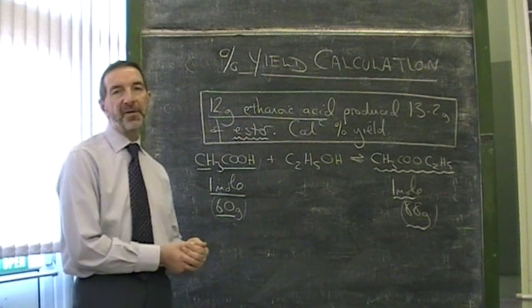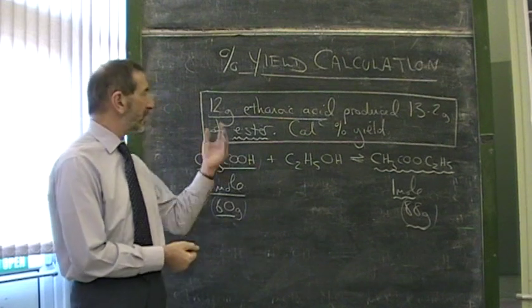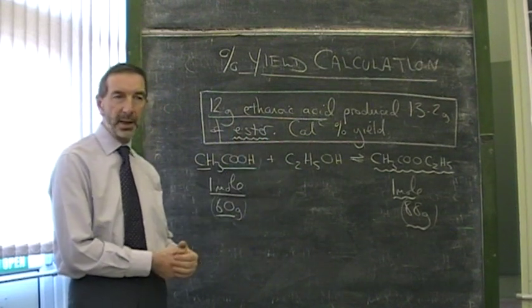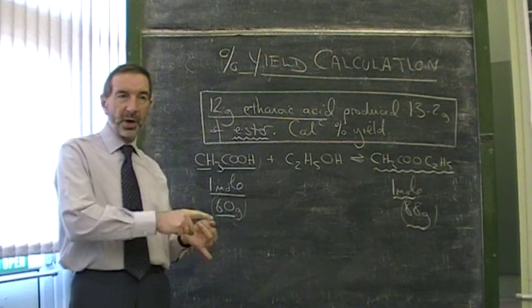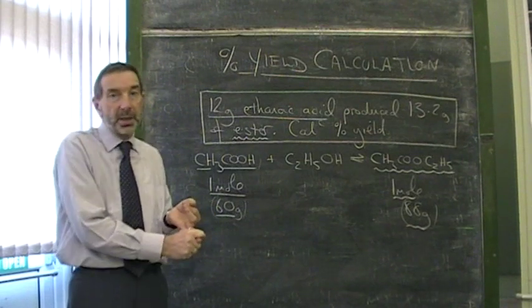You often end up with far less product than you think you should get. So really percentage yield is looking to compare how much you think you would get if it was a complete success against what you actually do get because it isn't a complete success.